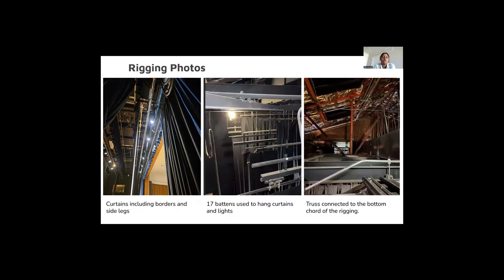Here are three images of the rigging. On the left you have the curtains being hung from battens, which are seen in the center picture. There are a total of 17 of these battens, and on the right image you can see the truss that supports the bottom cord of the rigging and is connected to the roof.